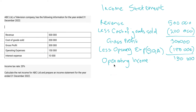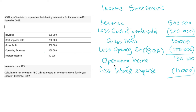Then we get to your interest expense, which will be deducted after you get your operating income. So we have your operating income, then we less your interest expense. This is when you get a loan and then you have to pay interest on that loan. Your interest expense is $10,000, and then that leaves us with $140,000.